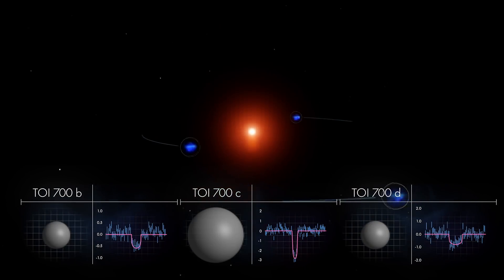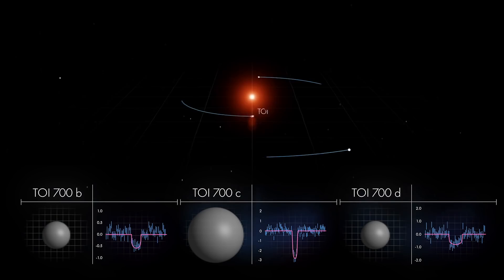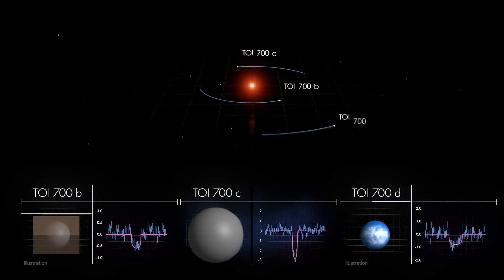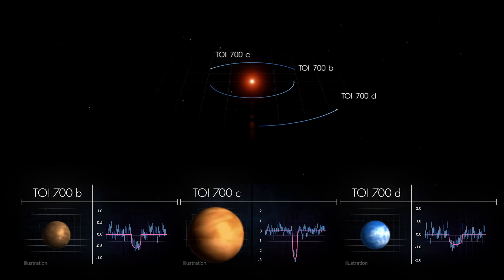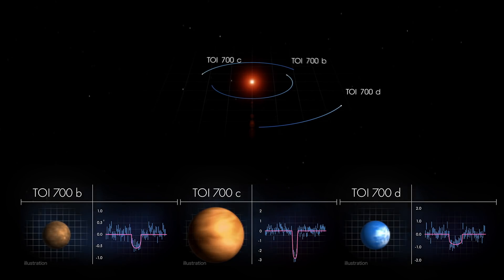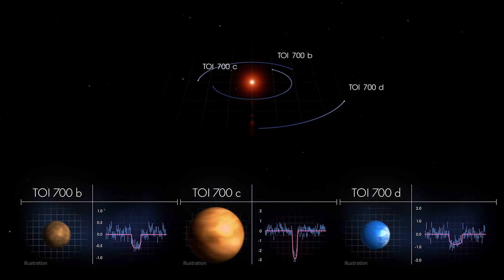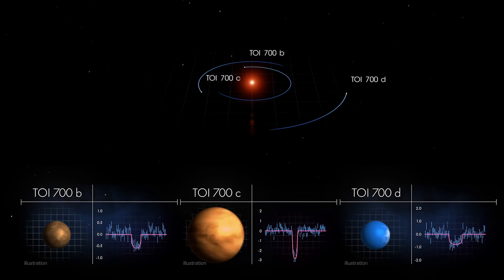Scientists determined that the inner and outer planets are almost Earth-sized and may be rocky. The middle world is more than twice as large and most likely made of gas. All three may be tidally locked, rotating just once each orbit, so the same side always faces the star.